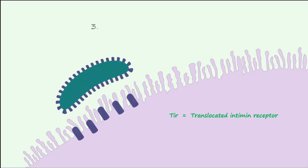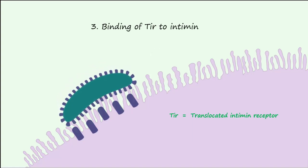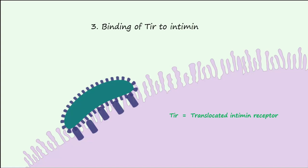The next step is called TIR-intimin binding. The ligand intimin expressed on the surface of the bacteria binds to TIR located on the enterocyte. This binding allows the bacteria to be more firmly attached.